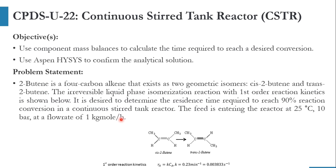The problem statement: 2-butene is a 4-carbon alkene that exists as two geometric isomers — cis-2-butene and trans-2-butene. The irreversible liquid-phase isomerization with first-order kinetics is: cis-2-butene → trans-2-butene, with rate r_A = K·C_A. The value of K is 0.3 per minute, meaning the activation energy is zero. We want to determine the residence time required to achieve 90% conversion in a CSTR.